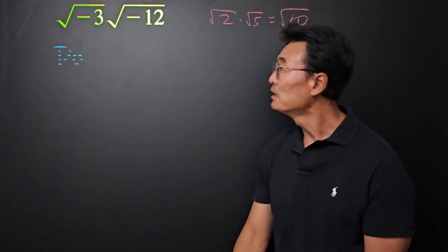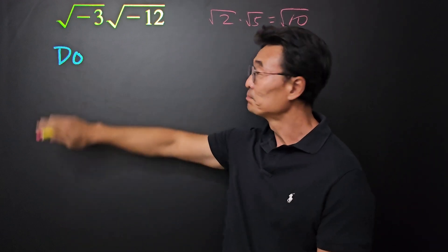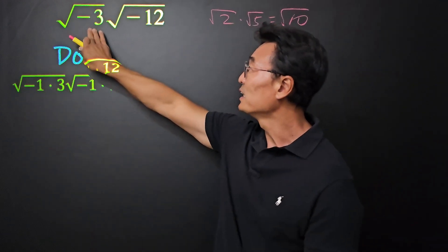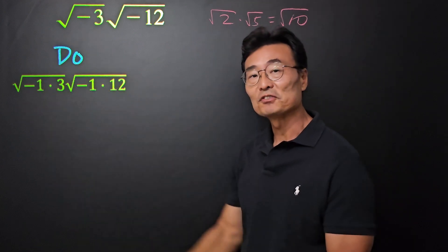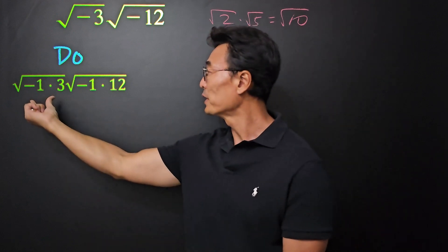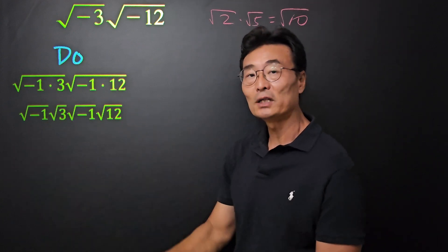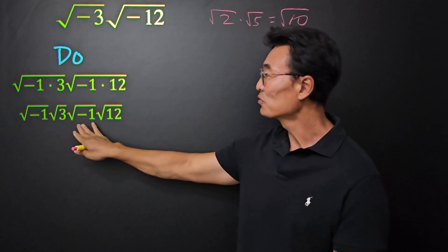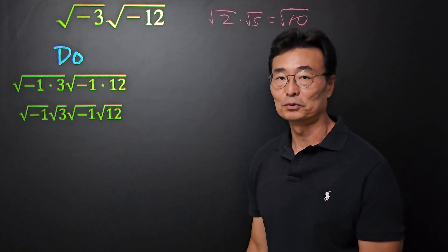Here's what we need to do. First, let's take a look at what we should do. We need to change that negative 3 into negative 1 times 3, and also the negative 12 into negative 1 times 12, and then separate it into root negative 1 times root 3, and also root negative 1 times root 12.